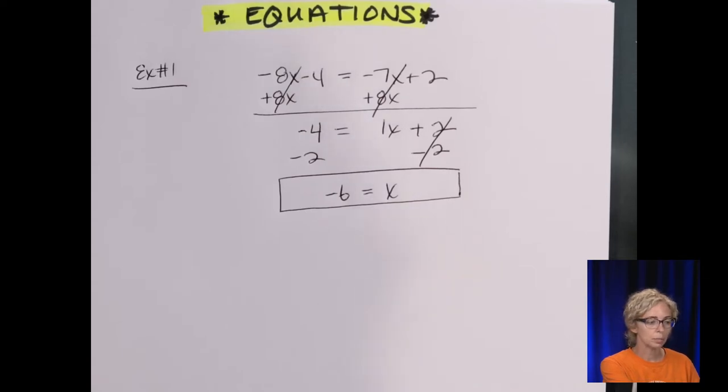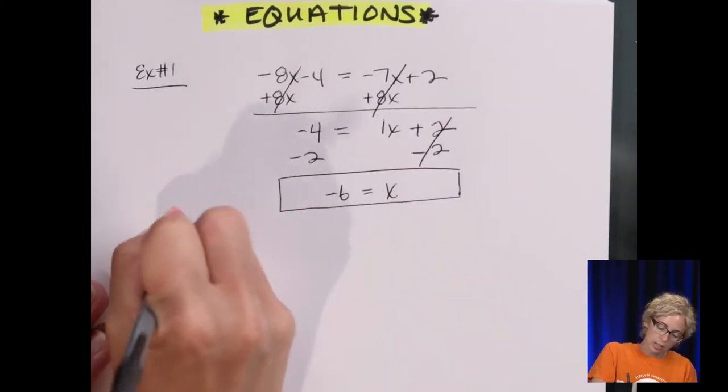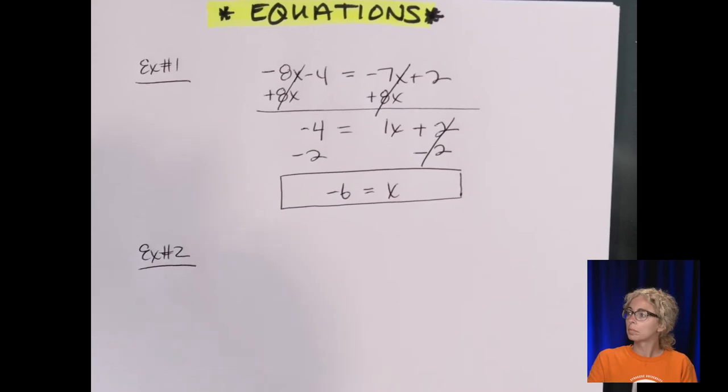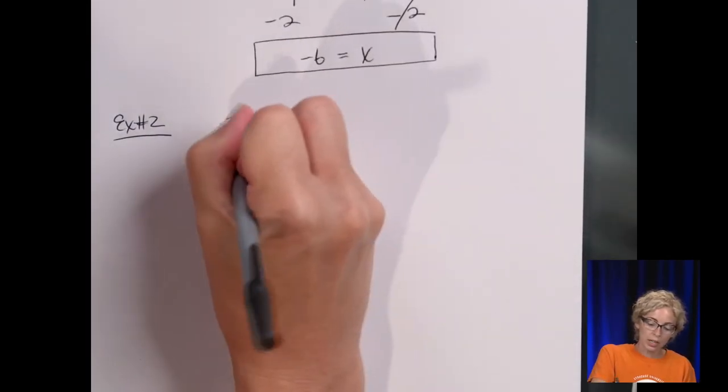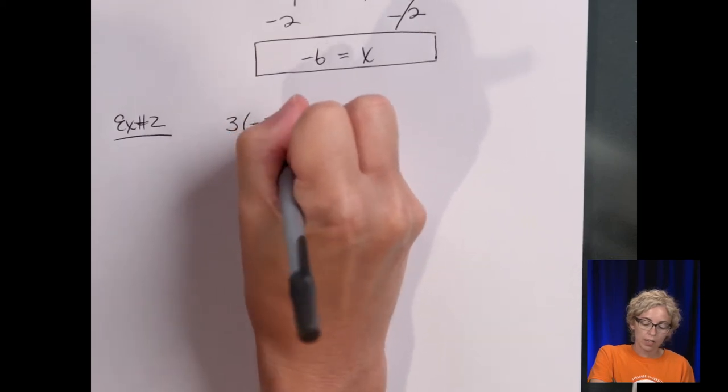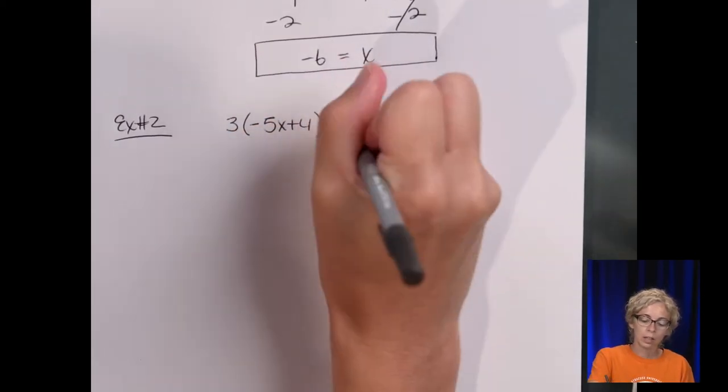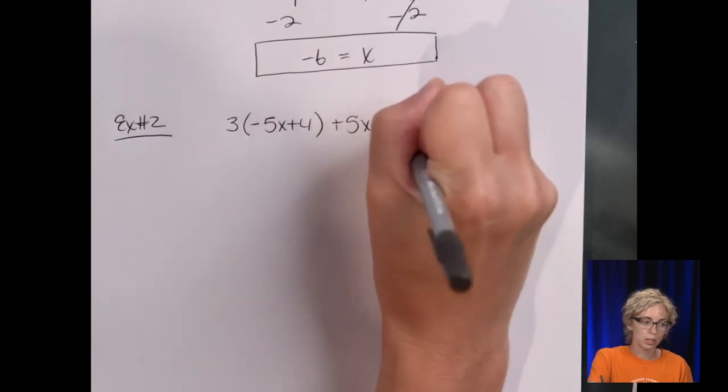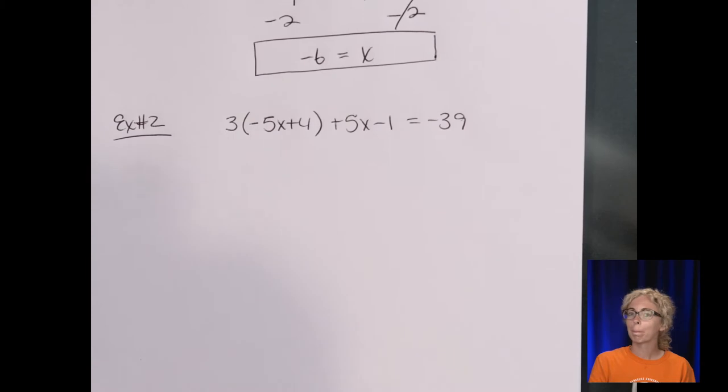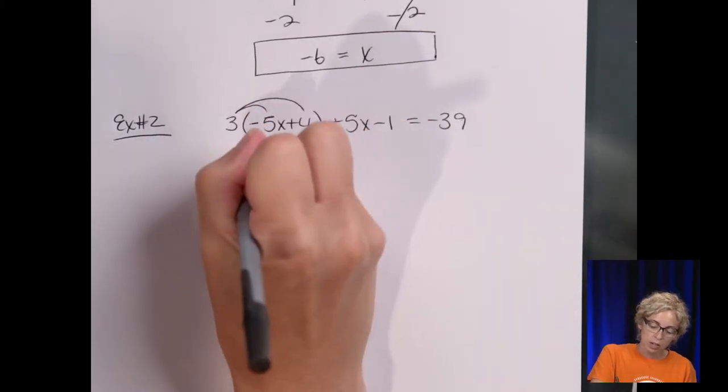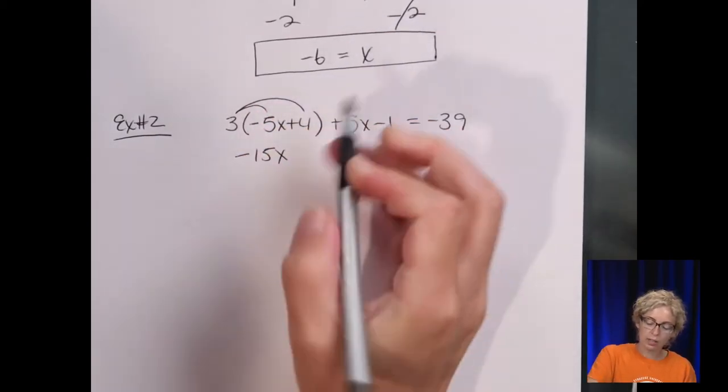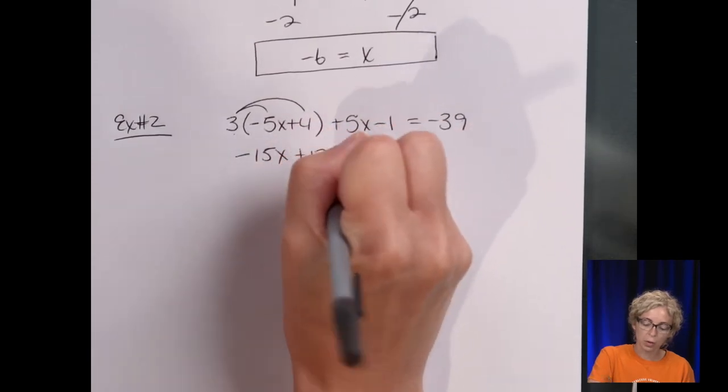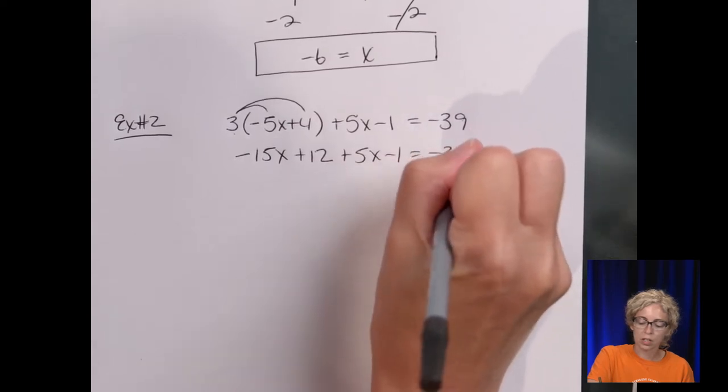So now let's change it up with an equation that's a little bit harder, so one with parentheses. So let's take a look at, this is example number 2: 3(-5x + 4) + 5x - 1 = -39. So first we're going to want to use the distributive property in order to remove those parentheses and combine like terms on the left side. So 3 times -5 is -15x, 3 times a positive 4 is a positive 12.